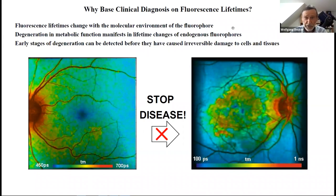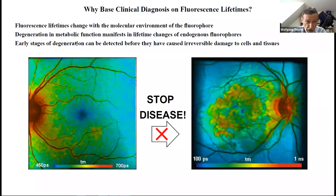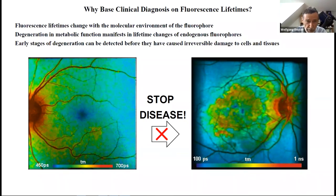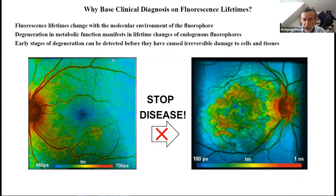The answer is simple, and I think you also know it, but it's an important thing to remember. Fluorescence lifetime changes with the molecular environment of the fluorophore. Therefore, degeneration in the metabolic function of cells and tissue manifests in lifetime changes of endogenous fluorophores. So there is a chance that early stages of degeneration can be detected before they have caused any irreversible damage to cells and tissue.